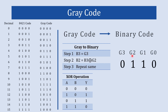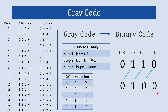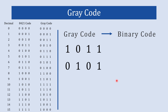Let's take one more example with gray code 0110. In step one, b3 = g3 = 0. In step two, b2 = b3 XOR g2: both are different, so b2 = 1. In step three, b1 = b2 XOR g1: 1 XOR 1 = 0, so b1 = 0. Then b0 = b1 XOR g0: 0 XOR 0 = 0. The binary equivalent is 0100, which you can verify in the table.